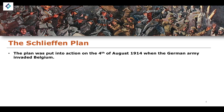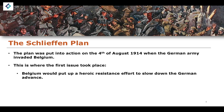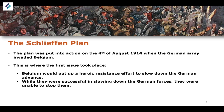Despite all these problems, the plan was put into action on the 4th of August 1914, when the German army invaded through Belgium. The first problem was that Belgian forces put up a heroic resistance effort, successfully slowing down the German advance. They were not able to stop or push back the Germans — Belgium wasn't a particularly strong military force — but they still slowed the advance at a critical time when Germany needed to move as quickly as possible.